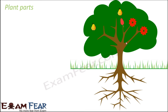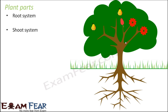Let us now look at the parts of a plant. We will talk about what parts any plant would have in general. Any plant has two major segments: the first is the root system, and the second is the shoot system.